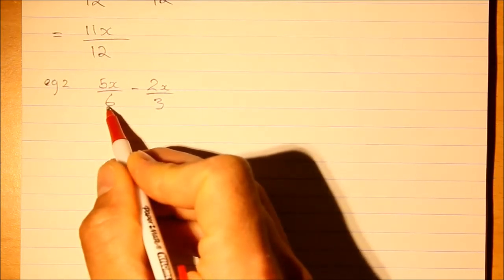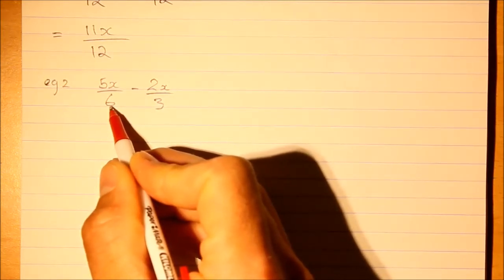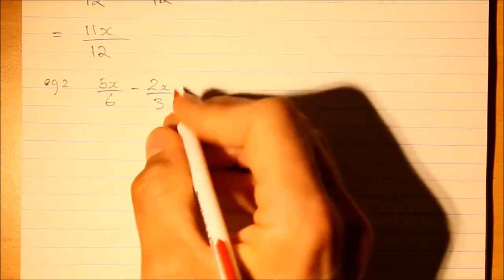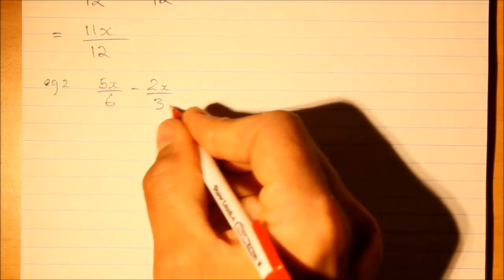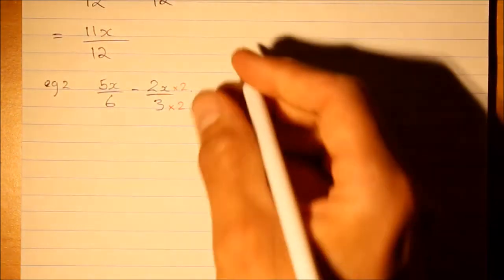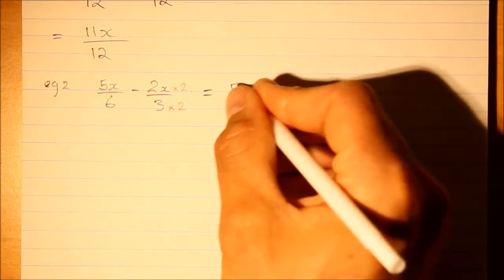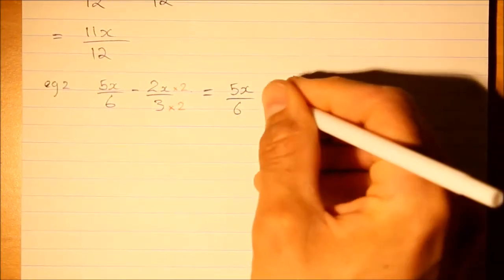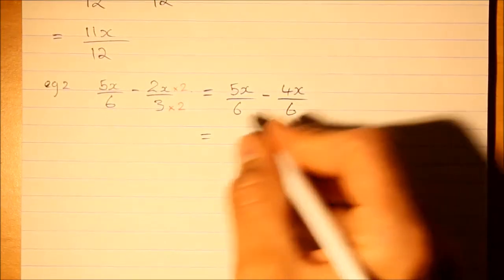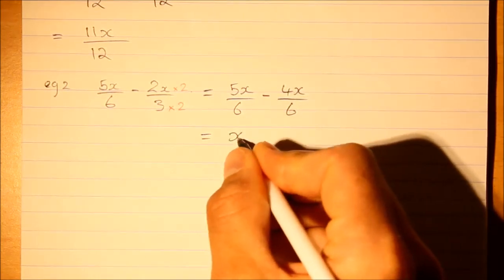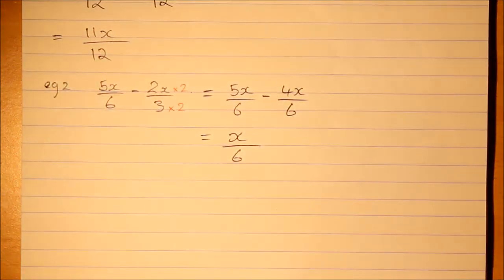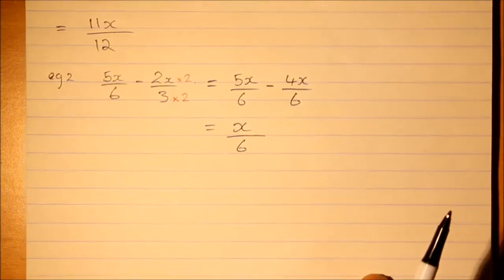The lowest common multiple here is actually 6. That 6 is the first multiple of itself and 6 is the second multiple of 3, so I don't even have to touch this fraction on the left. I can save myself a lot of work if I just multiply by 2 both sides. What are my new equivalent fractions? That's 5x over 6 minus 4x over 6, and because they're common denominators I can say that's x over 6.